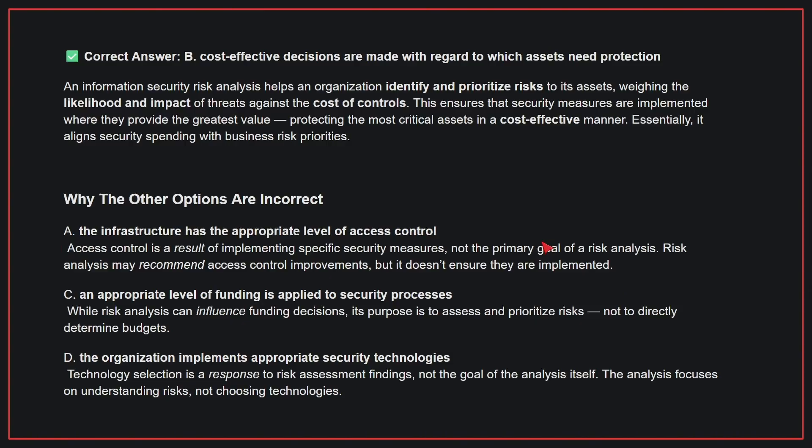An information security risk analysis helps an organization identify and prioritize risks to its assets, weighing the likelihood and impact of threats against the cost of controls. This ensures that security measures are implemented where they provide the greatest value, protecting the most critical assets in a cost-effective manner. Essentially, it aligns security spending with business risk priorities.